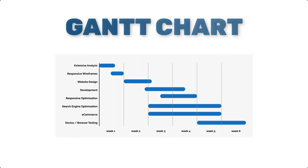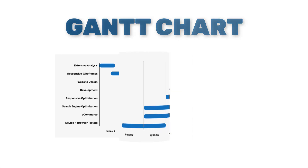Let's start with one of the most popular charts in project management – Gantt Charts. Gantt Charts are a staple in project management, helping you visualize your project timeline and track progress against deadlines. Imagine being able to see all your tasks laid out over time. Gantt Charts do just that – showing task durations, dependencies, and milestones all in one place.